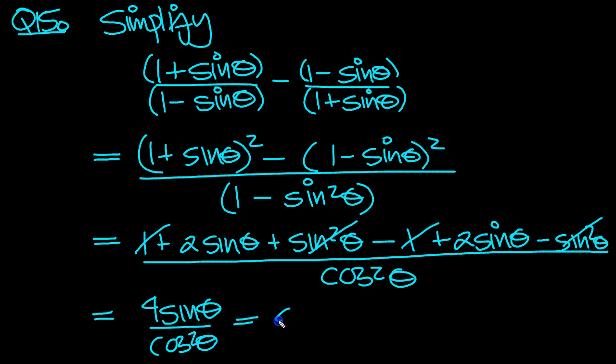Which is equal to 4 tan theta sine over cosine, so one of those is gone, times a sec, or 4 sec theta tan theta.